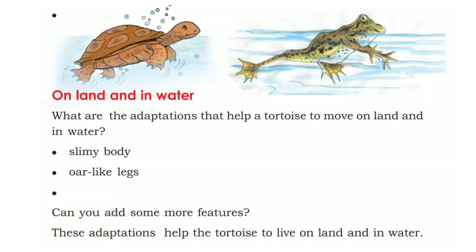Next are the adaptations of the tortoise. It can move on both land and water. The adaptations that help the tortoise are: first, a streamlined body; second, oar-like legs, which are used for movement like oars on a boat; and third, a shell that helps protect it from predators.